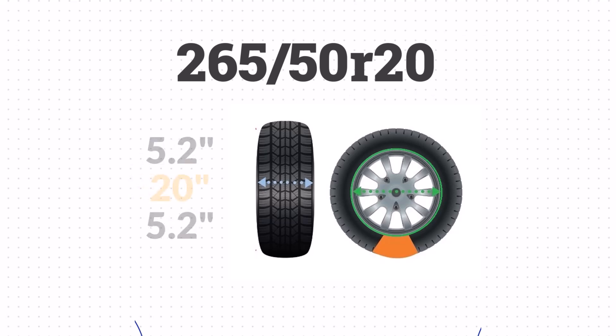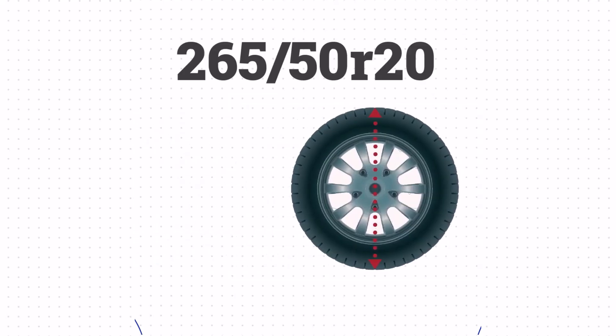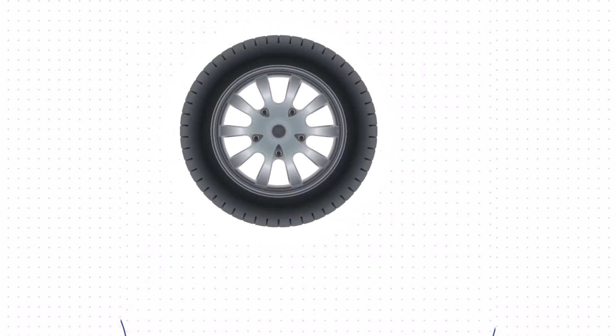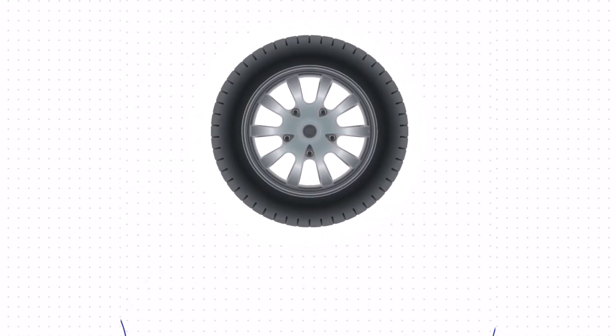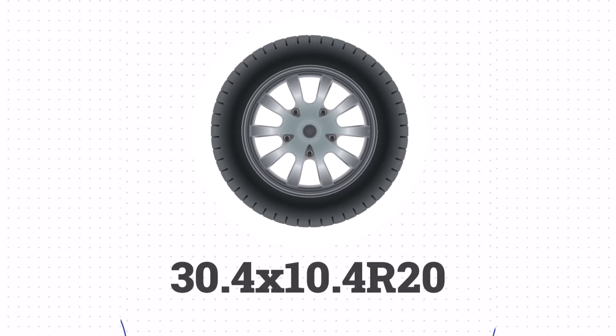We'll take the sidewall size, add the wheel size, and then add the sidewall size one more time. That gives us a height of 30.4 inches. The size of 265/50R20 is equivalent to 30.4 by 10.4 R20 in inches.